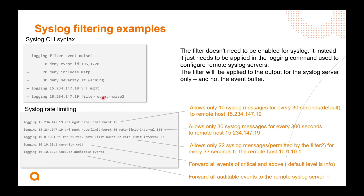Underneath that we've got some syslog rate limiting examples. Here I've got one going to a syslog server with a rate limit burst of 10, which is 10 syslog messages for every 30 seconds — that's the default. The next one is a variation: I'm changing it to 30 syslog messages for every 300 seconds. This one has a different filter with a different burst rate and an interval of 33 seconds.